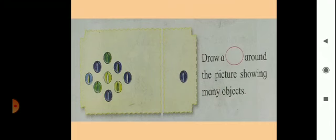Here are marbles. In the first box we can see many marbles — more than one. Count them: one, two, three, four, five, six, seven, eight, nine. And in the second box we can see only one marble, which means single. The question is: draw a circle around the picture showing many objects. So you have to circle these nine marbles which are more than one.